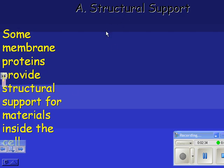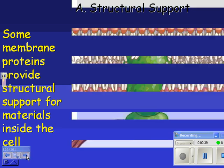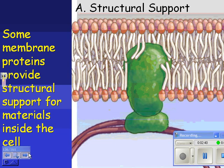So we'll look at structural support first. Cell membrane proteins provide structural support for the materials inside the cell. You just need the cell to be the right shape, and that's what this protein attached to this protein will do.